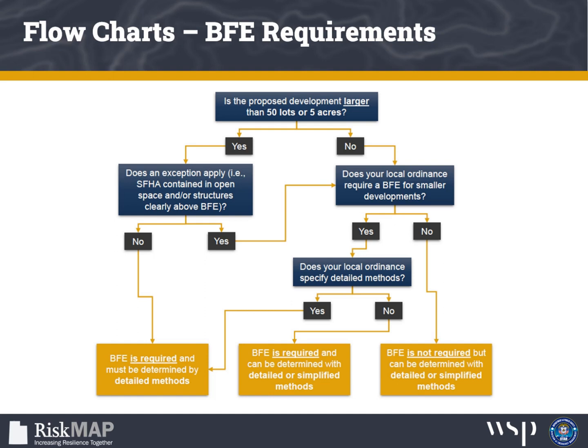This flowchart can be used to determine whether a BFE is required to determine reasonably safe from flooding in an approximate zone. First, determine whether the proposed development is larger than 50 lots or 5 acres. If yes, determine whether any exceptions apply. If no exceptions apply, a BFE is required and must be determined by a detailed method. If an exception applies, or the development is less than 50 lots and 5 acres, check your local ordinance for any stricter requirements than the minimum federal standards. If none apply, the federal minimum requirement is that a BFE is not required, but it is still the local floodplain administrator's responsibility to determine if it is reasonably safe from flooding.